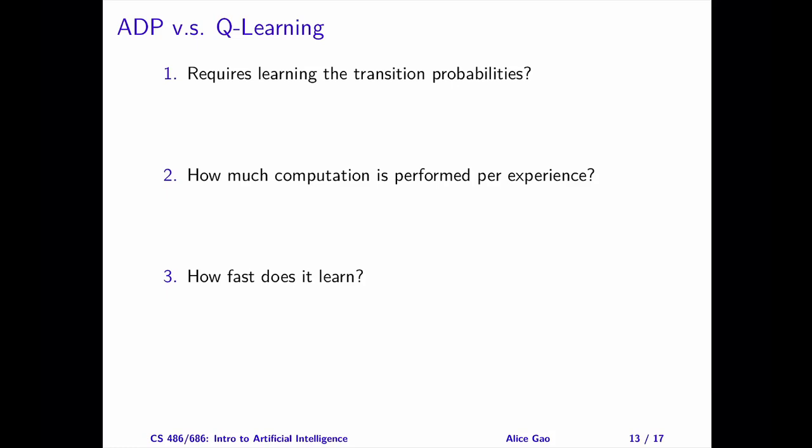Number two, how much computation is performed per experience? Comparing the two, ADP requires more computation per experience. After receiving every experience, ADP tries to maintain the consistency in the utility values by adjusting them using the Bellman equations.